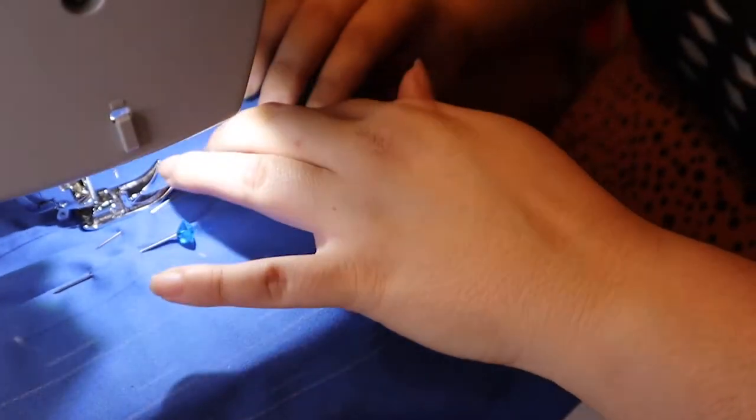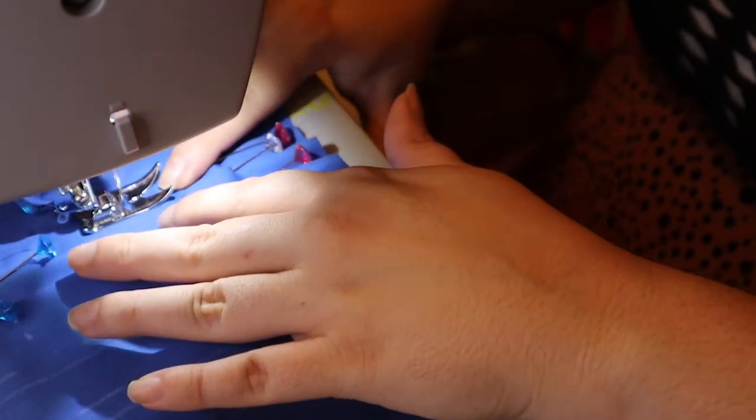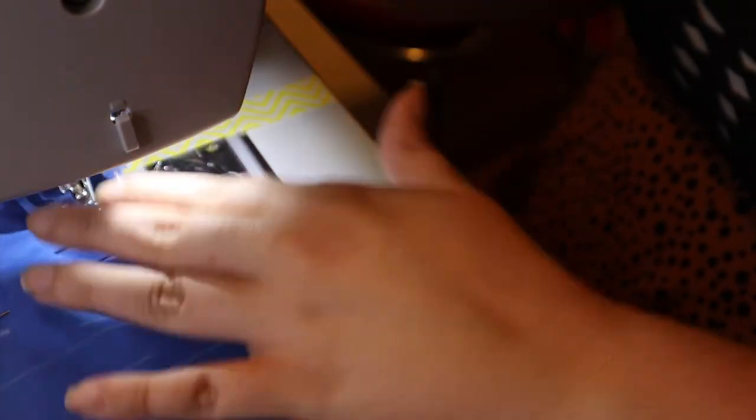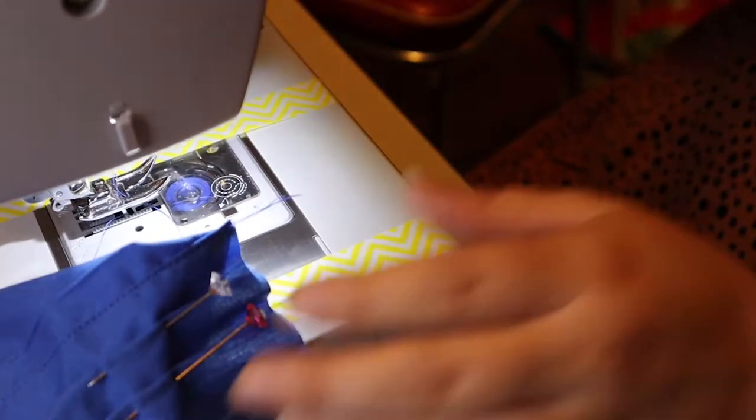When you stitch this on the machine, make sure you get it as close to the fold as possible so the flaps don't go flapping around.